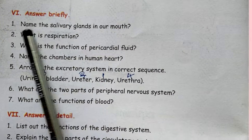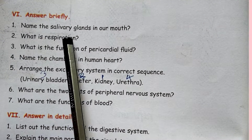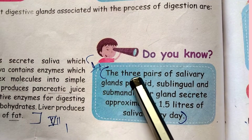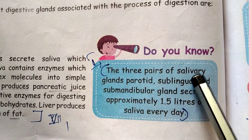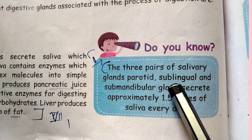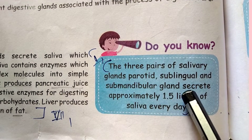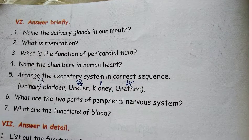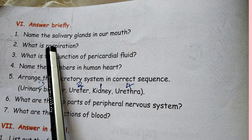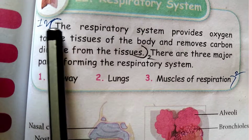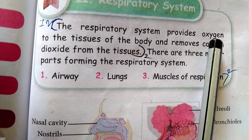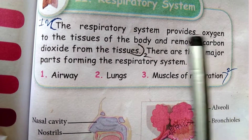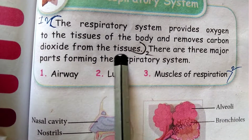Answer briefly. Name the salivary glands in our mouth. The answer is: there are three pairs of salivary glands — parotid, sublingual, and submandibular glands. What is respiration? The respiratory system provides oxygen to the tissues of the body and removes carbon dioxide from the tissues.